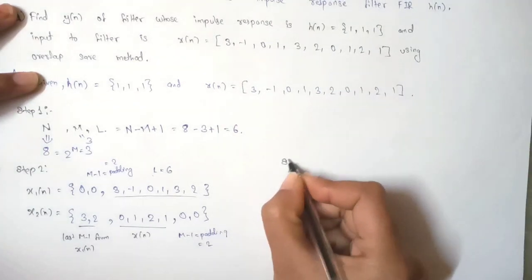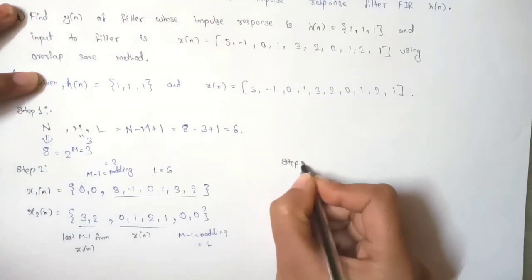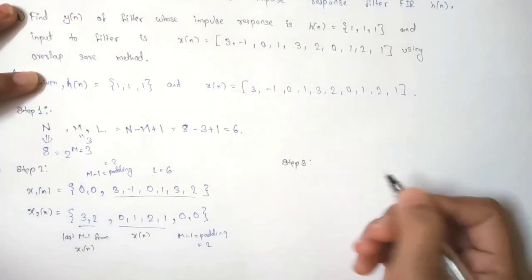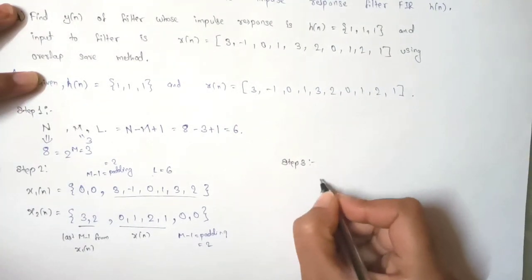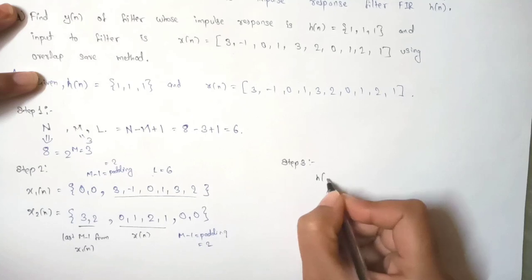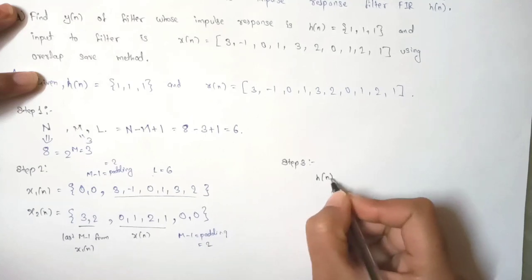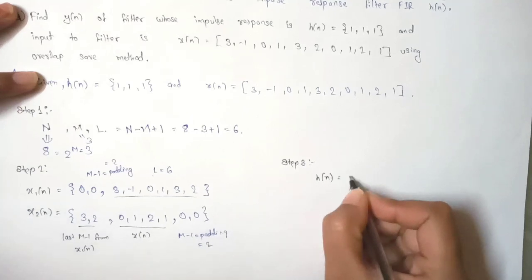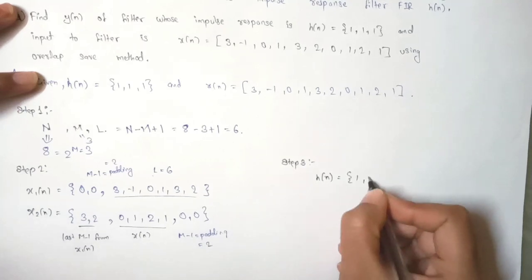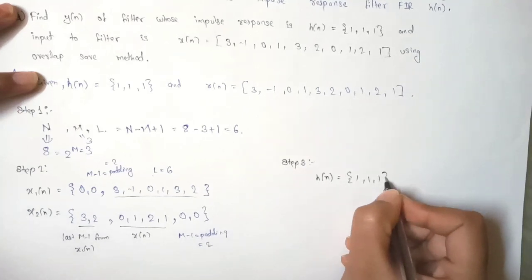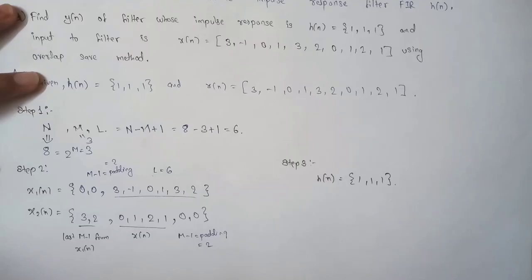In step 3, we simply note what our h(n) is. h(n) = {1, 1, 1}.